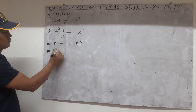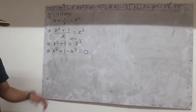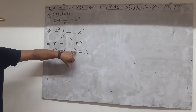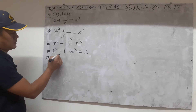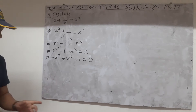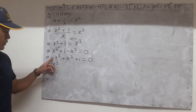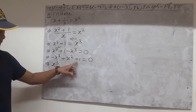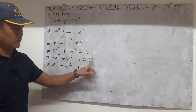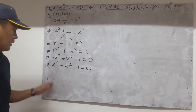Now let us bring all terms to one side. Shifting gives us minus x cubed, and nothing is left on the right side, so we get zero. Arrange the powers of x in descending order: highest power is x cubed (power 3), then x squared, then plus 1, equals zero. We normally want the first term to be positive, so we change the sign: x cubed minus x squared minus 1 equals zero.